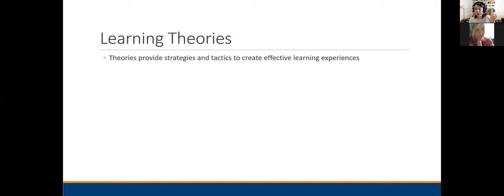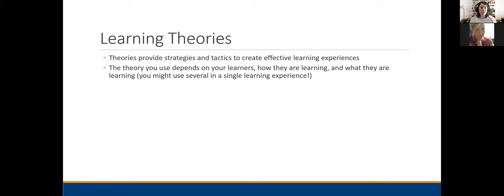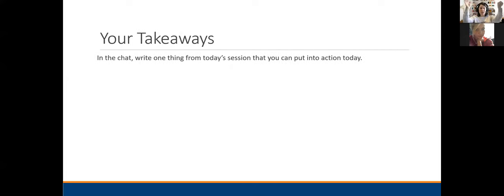We talked about learning theories — only three, but there are tons more with tons more nuance. Theories are great because they're the science of learning; they provide strategies and tactics to help create effective learning experiences. What you use depends on your learners, how they're learning, and what they're learning. The more variables you consider, the easier it gets over time. So — one thing from today's session you can put into action today: the 10-and-2 rule. If you walk away with one thing, that's a really good one.